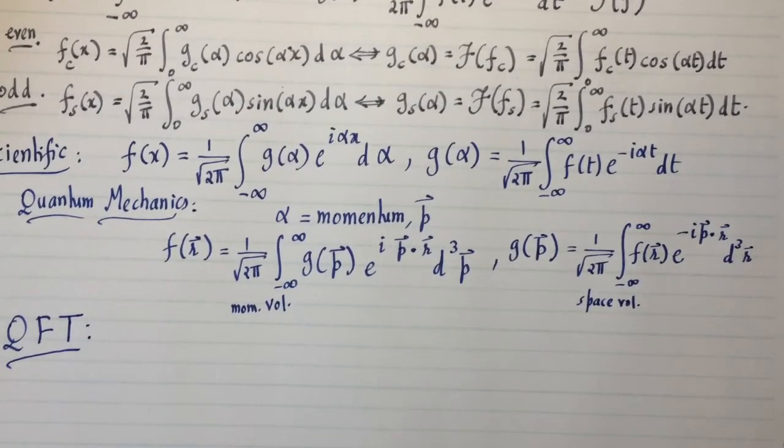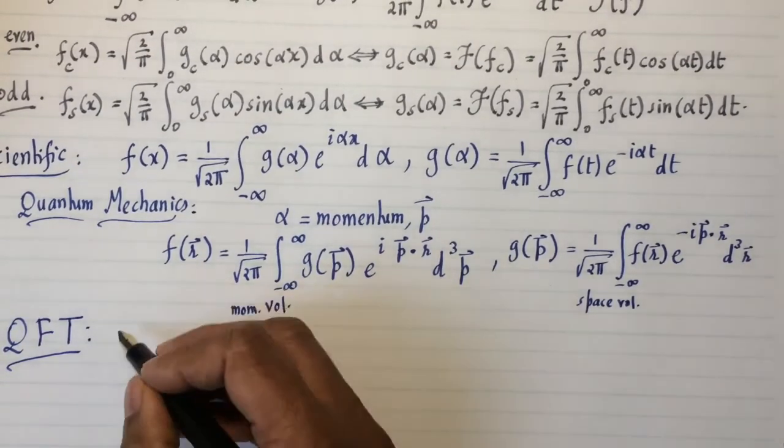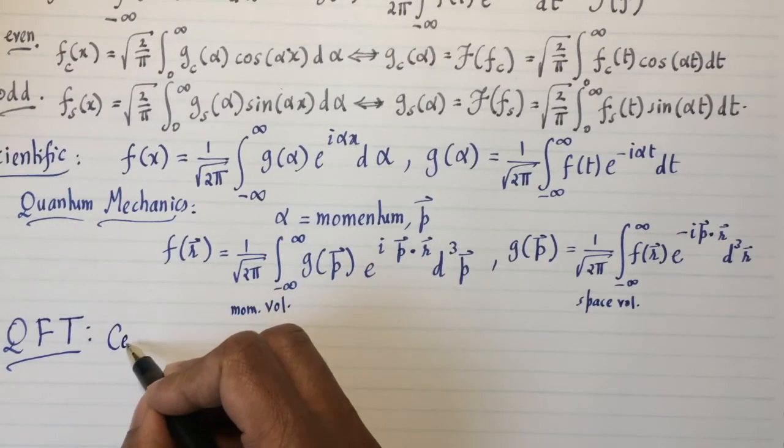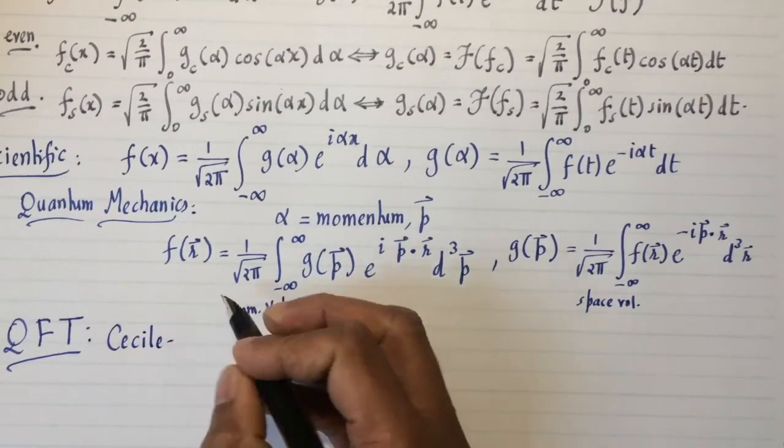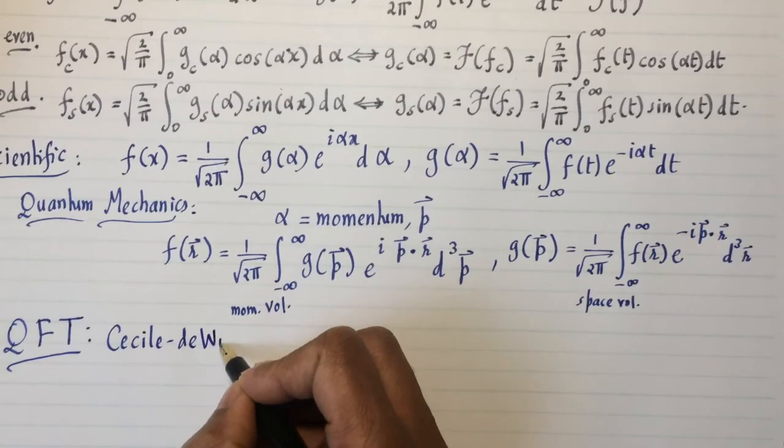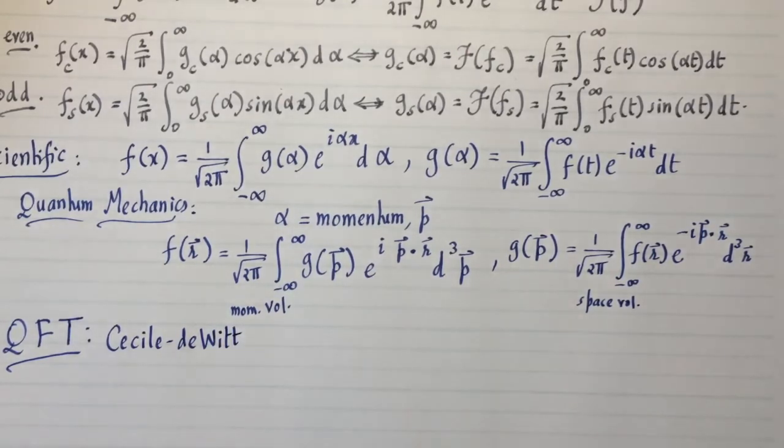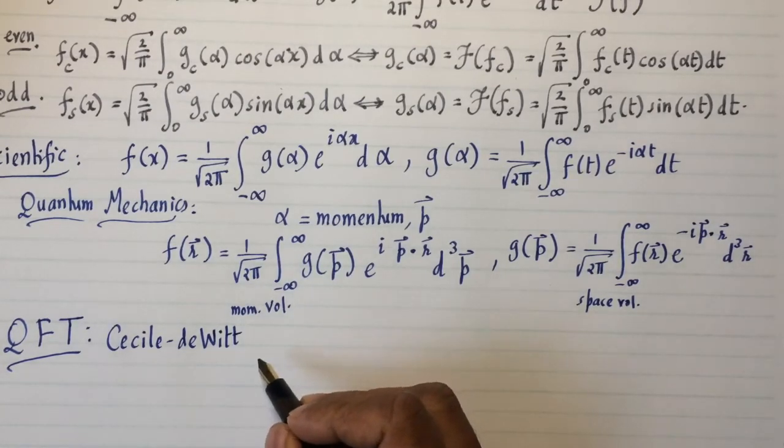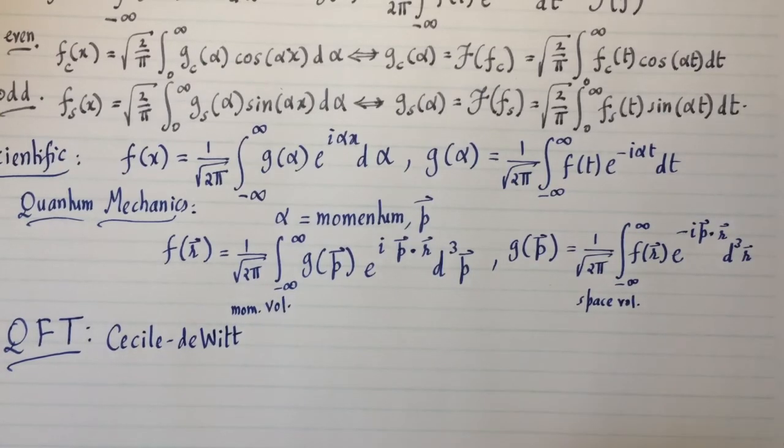But my mentor, Cecile DeWitt, the legendary mathematical physicist from UT Austin, later on she got the Legion of Honor from the French government, the highest civilian award given by the French government. And she worked her entire life in path integrals. And for her, this kind of thing was bread and butter.